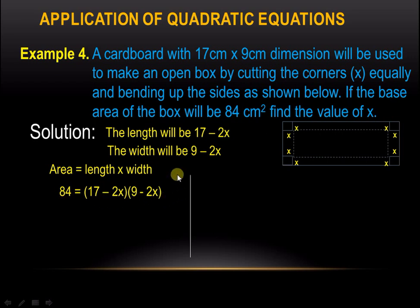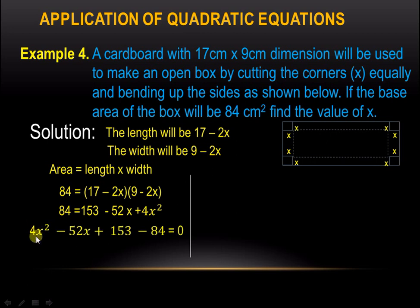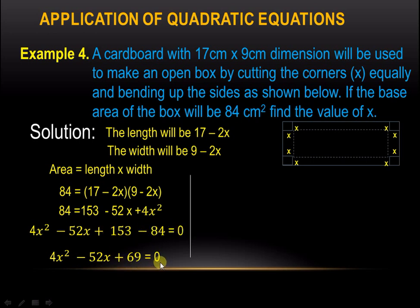Multiplying this out, we get 84 equals 153 minus 52x plus 4x squared. Transferring 84 to the other side, we get 4x squared minus 52x plus 69 equals 0. Factoring this, the factors are (2x minus 23)(2x minus 3) equals 0.